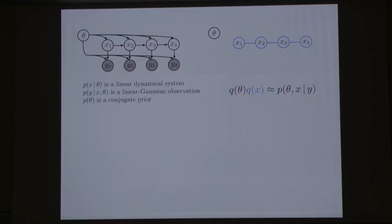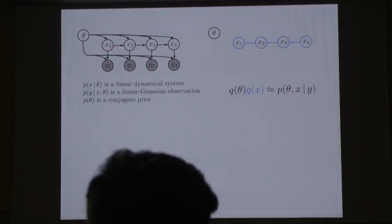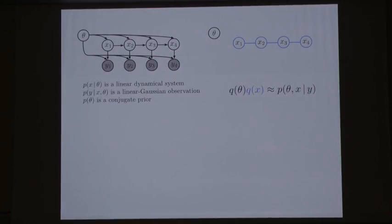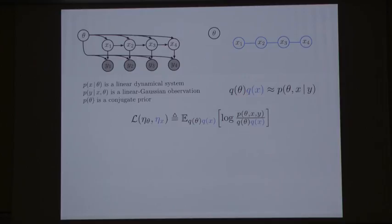We can do structured variational mean field inference in this model. To approximate the posterior distribution given some observations Y, we write down a variational distribution Q that factorizes over Q of theta and Q of X. What I'm going to show you is all the ways we can take advantage of this model structure to make a really nice inference learning algorithm. It turns out that the optimal densities for Q of theta and Q of X stay in the same exponential families as their conditionals.